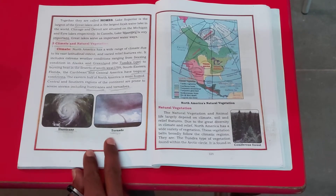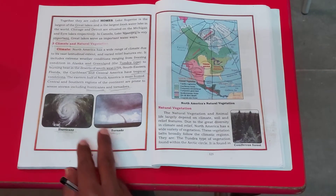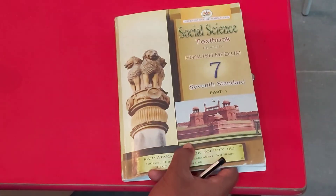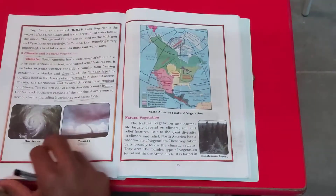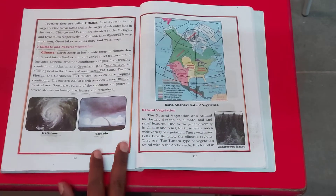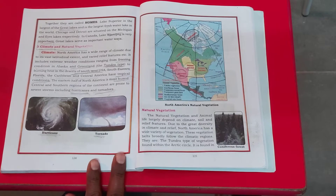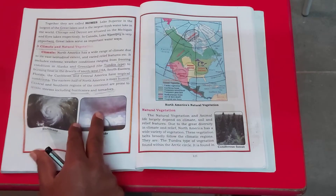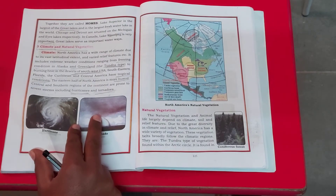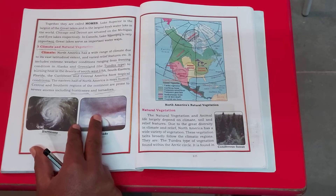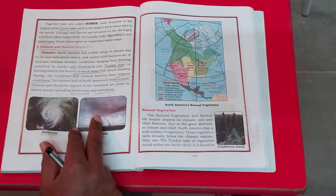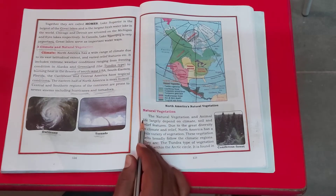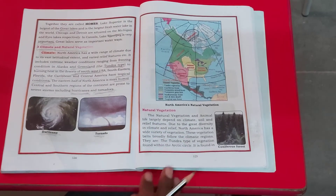Good morning, dear students. This is Social Science for 7th class. In the last class we discussed geography chapter 12, North America — its extent, location, physical features, and climate. But today we are going to discuss about natural vegetation.